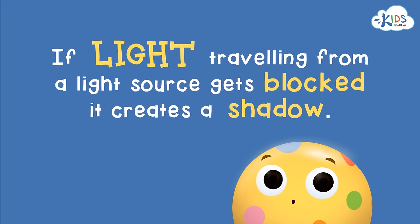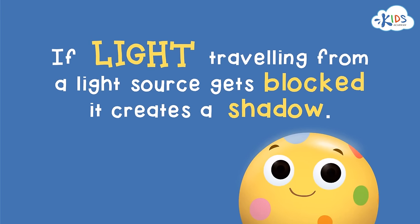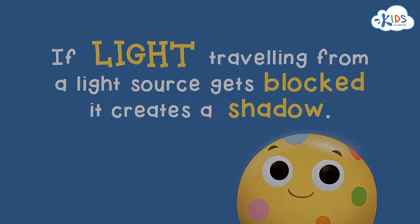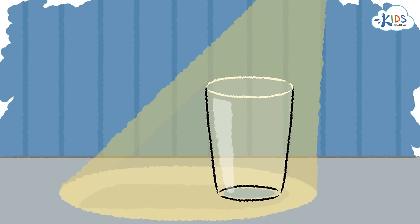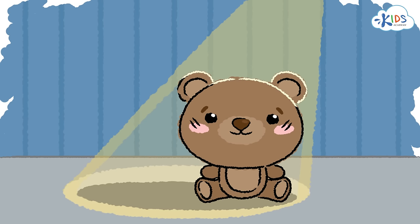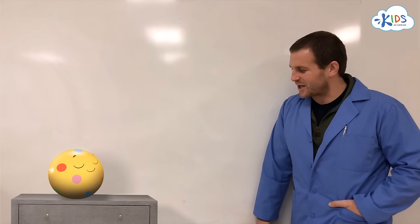Today, we learned that if light traveling from a light source gets blocked, it creates a shadow. Different objects can create different types of shadows. Transparent means all light passes through — these objects are almost invisible. Translucent means some light can pass through. And opaque means no light can pass through. Opaque objects make really good shadows. That's a lot of cool stuff about shadows. Let's get back to our shadow puppets.